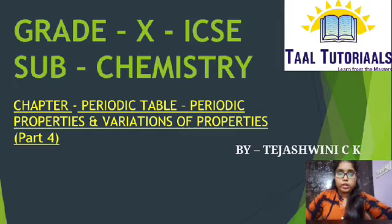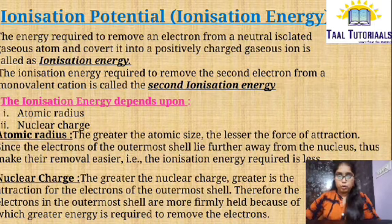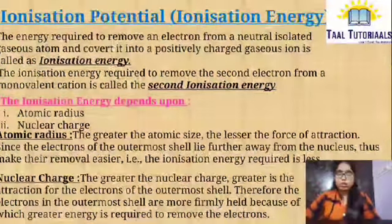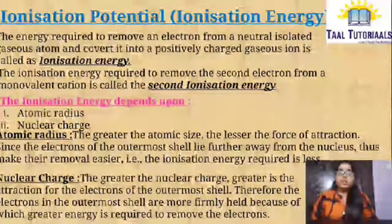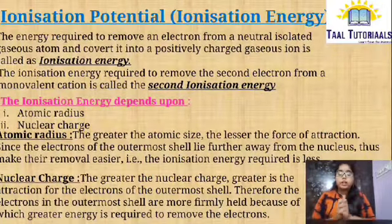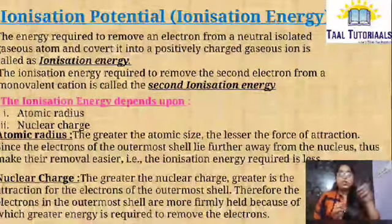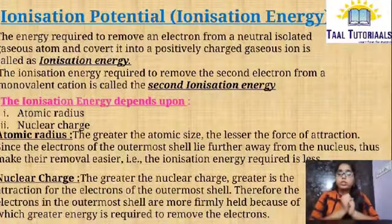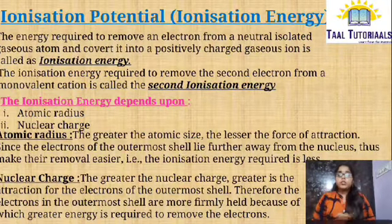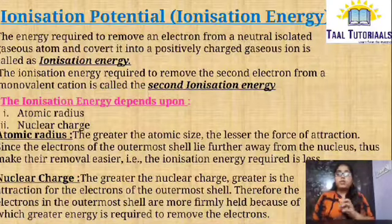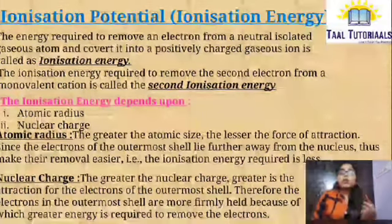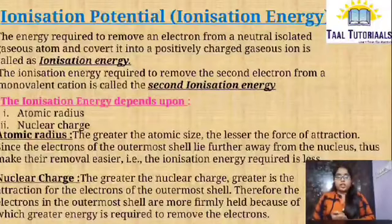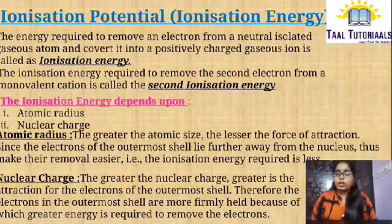The next periodic property is Ionization Potential, also known as Ionization Energy. Ionization Energy is the energy required to remove the outermost electron of the outermost shell — that is, to remove an electron from a neutral isolated gaseous atom and convert it into a positively charged gaseous ion.